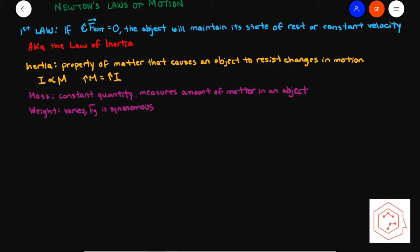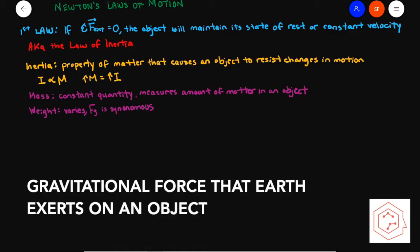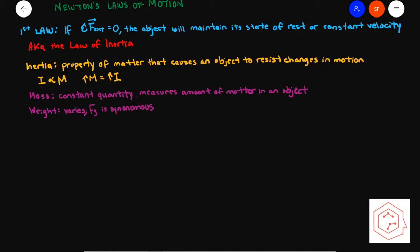Let me quickly remind you about the difference between mass and weight. Mass is an inherent property of the object that does not change and only concerns the amount of matter within the object. Whereas weight varies depending on several different factors, and the gravitational force on an object is synonymous with the definition of weight.